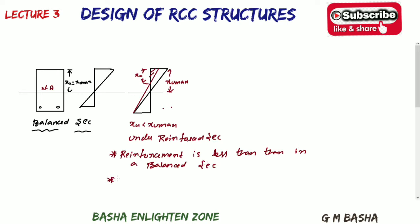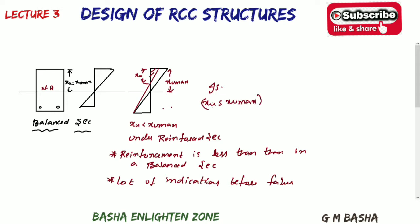In the under-reinforced section there will be a lot of indications before failure, unlike the balanced or over-reinforced sections which may fail suddenly. That is the reason IS code refers to the design of under-reinforced sections. At most it can be a balanced section, meaning XU less than or equal to XU maximum. IS code also prefers this condition.